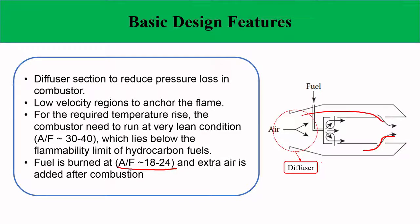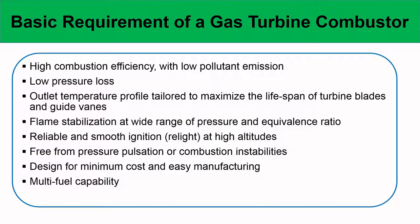The basic requirements of a gas turbine combustor include: high combustion efficiency with low pollutant emission. High combustion efficiency means no unburnt fuel — unburnt fuel undergoes partial combustion producing carbon monoxide and leads to soot and smoke formation. Low pressure loss is essential for the reasons already described and the outlet temperature profile should be tailored to maximize the lifespan of the turbine blades and guide blades.